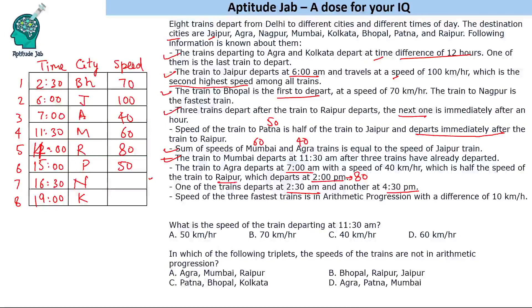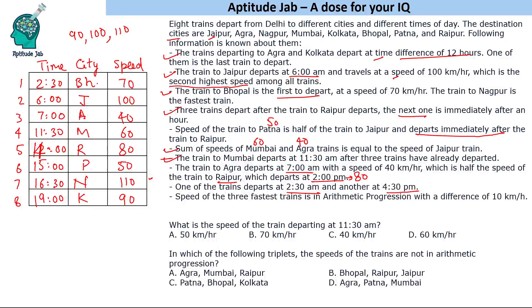If Jaipur is the second highest at 100, then the fastest is 110 and the third fastest is 90, forming an arithmetic progression with a difference of 10. So Nagpur's speed is 110. The remaining unfilled train is Kolkata, which gets a speed of 90 kilometers per hour. All speeds and cities are now filled.